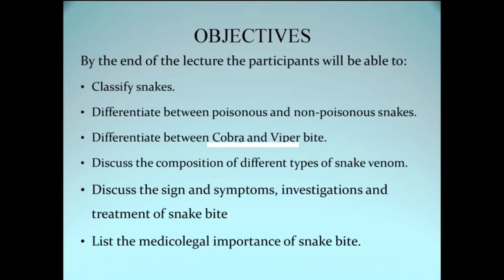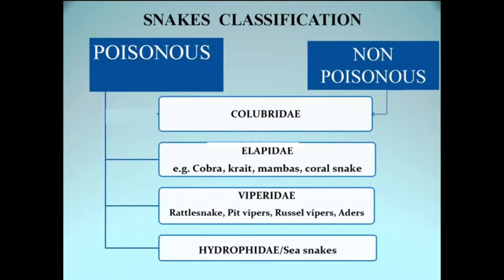We'll cover the difference between poisonous and non-poisonous snakes, followed by differences between varieties of poisonous snakes. Then we'll see the different properties of snake venom and come to snake poisoning or snake bite, which will include signs and symptoms, investigations, treatment, and finally the medical legal importance of snake bite.